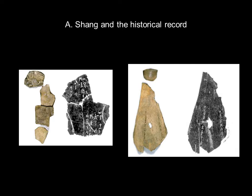An ox shoulder bone can be quite large, as can be the underside of a turtle shell, because these turtles would be captured in the North China Sea more than likely. What would then happen is they would take these bones, and once they were dried out, they would take a bronze object, heat it, and press it against the bone. Then, based on how the bone cracked, royal diviners would read it.